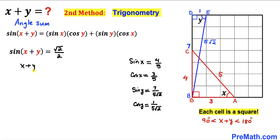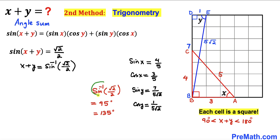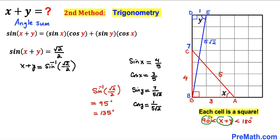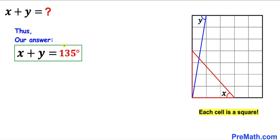So x plus y equals sine inverse of √2/2, which is either 45 degrees or 135 degrees. Since we know x plus y must be greater than 90 degrees, therefore angle x plus y turns out to be 135 degrees. Thanks for watching and please don't forget to subscribe to my channel for more exciting videos.